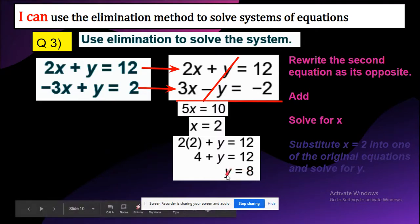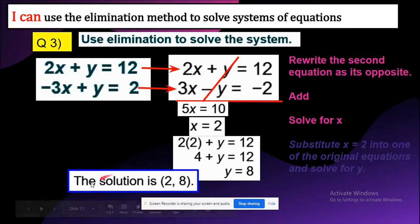Now we found the value of y and the value of x. All you need to do now is write the solution as (x, y), just like this. So the solution is (2, 8).